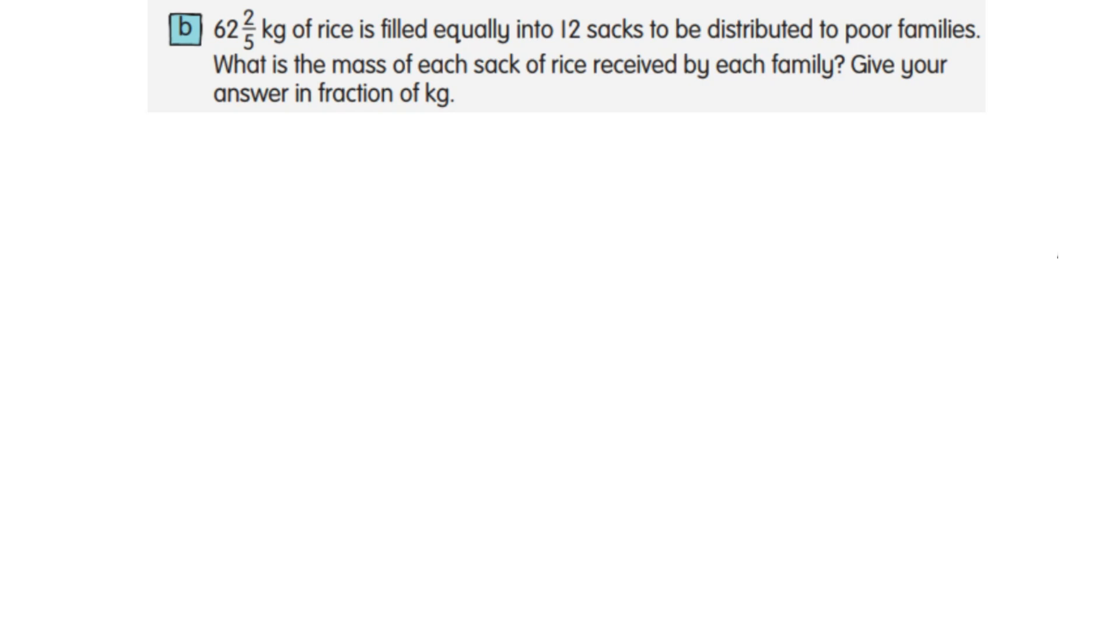So 62 2/5 kilograms are distributed to 12 sacks, so we need to divide. 62 2/5 divided by 12. Convert 62 2/5 to improper fraction.